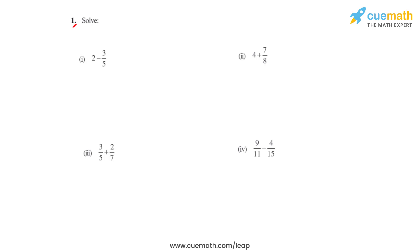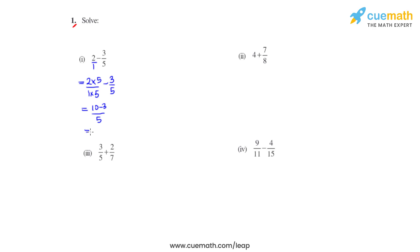Question number 1 asks us to solve the following bits. We will start with the first bit. Our main objective here is to make the denominator the same. The LCM of 1 and 5 is 5. To get the denominator same as 5, we will multiply 2 with 5 in the numerator and 5 in the denominator as well. So that gives us 10 over 5 minus 3 over 5. Taking the common denominator as 5 gives us 10 minus 3 in the numerator, so our final answer is 7 fifths for bit 1.